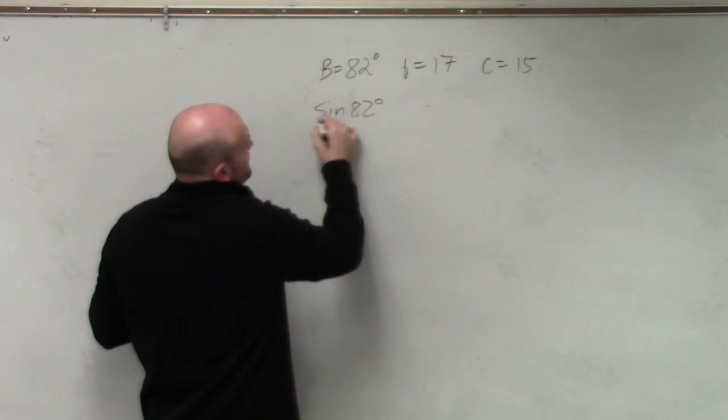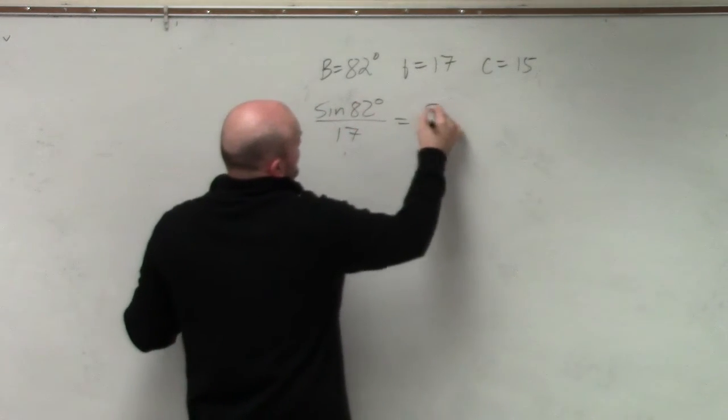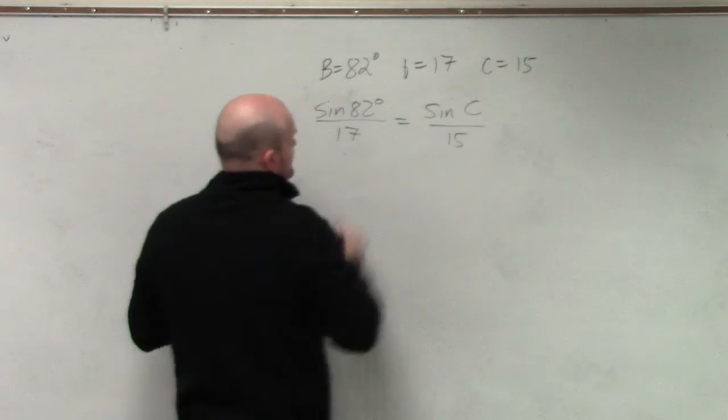So I'll do sine of 82 degrees over 17 equals the sine of big C over small c, which is 15.